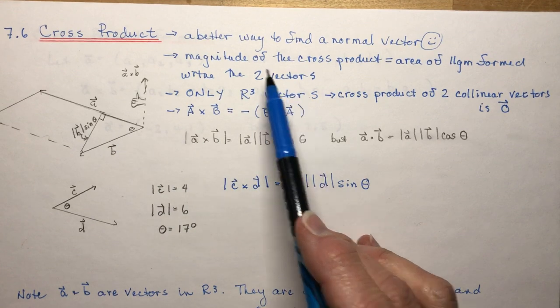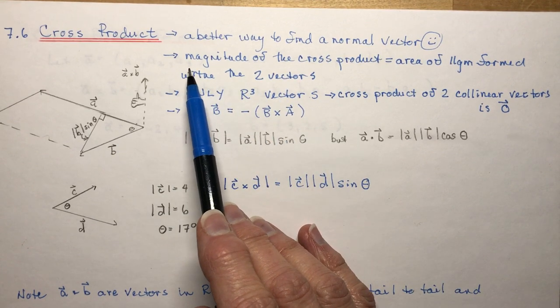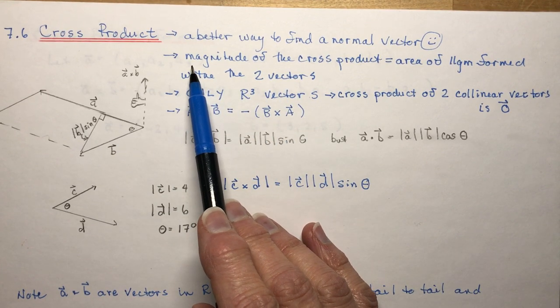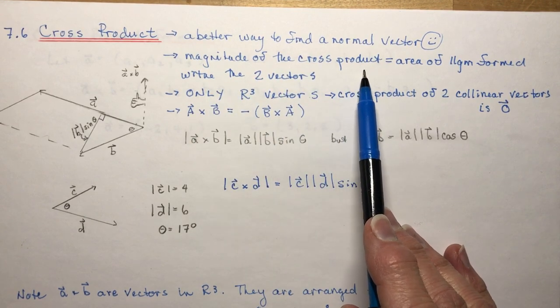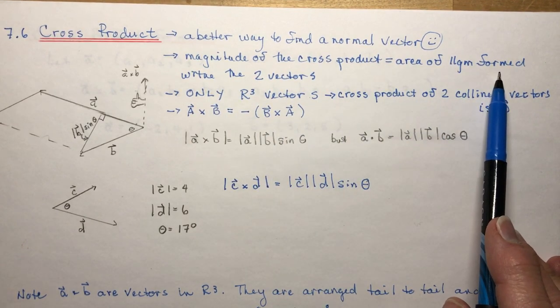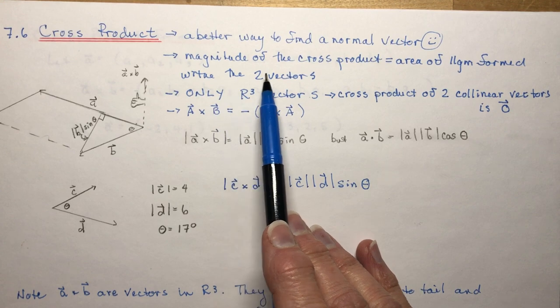It only works in R3. Another interesting calculation here is that if we find the magnitude of the cross product we actually find the area of the parallelogram formed with the two vectors.